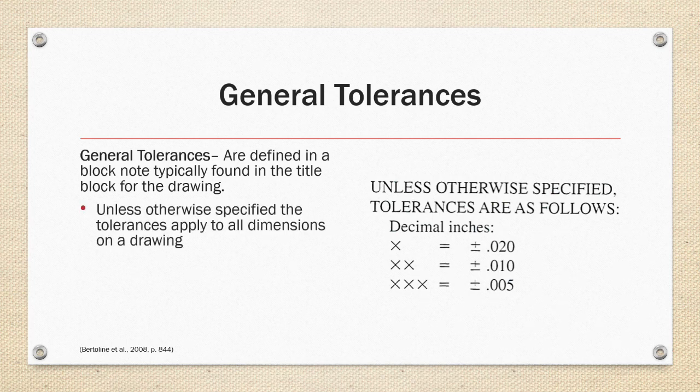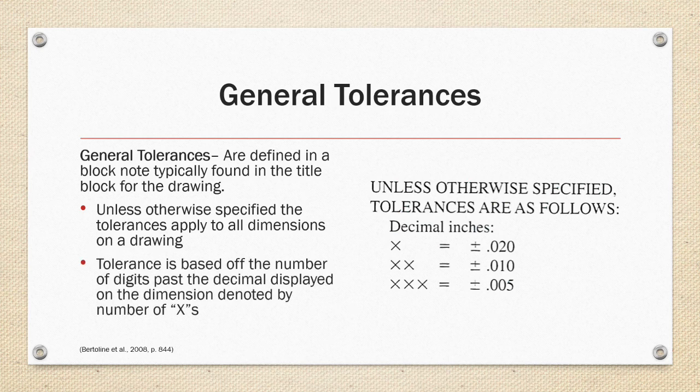General tolerances are defined in a block note typically found in the title block for the drawing. Unless otherwise specified, the tolerance applied to all dimensions on a drawing and the tolerance is based off the number of digits past the decimal displayed on the dimensions denoted in the chart by the number of x's.